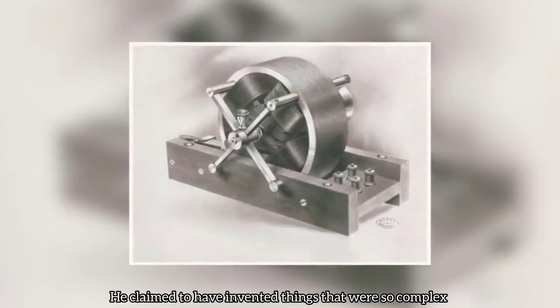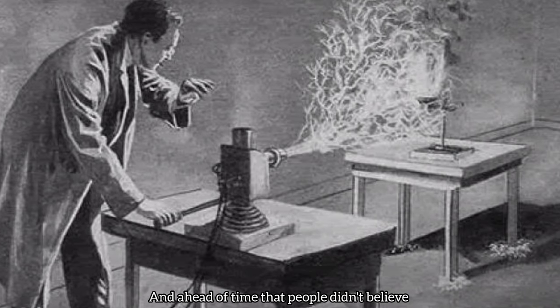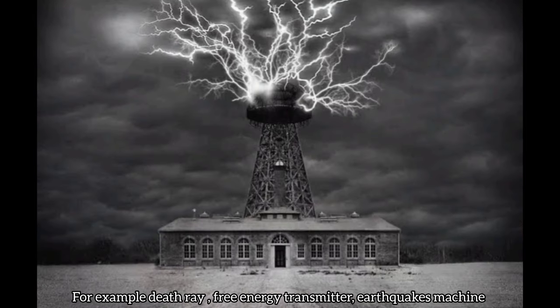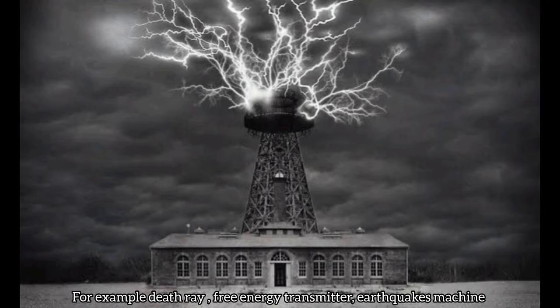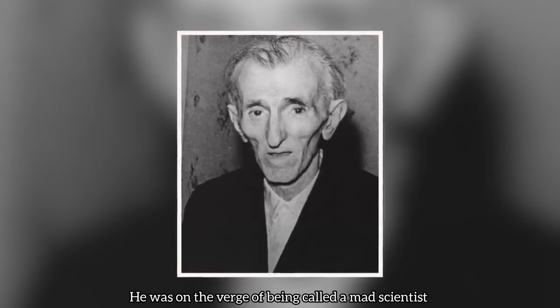Tesla had so many things in his mind. He claimed to have invented things that were so complex and ahead of their time that people didn't believe they would actually work. For example, death ray, free energy transmitter, earthquake generating machine and many more. In fact, because of all these claims, he was on the verge of being called a mad scientist.